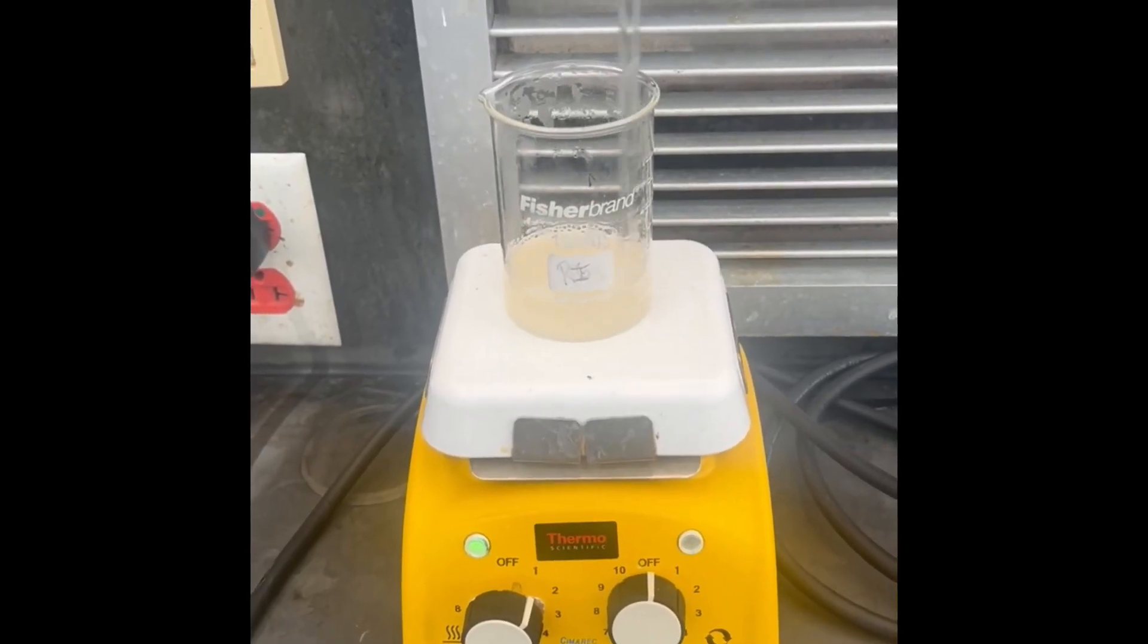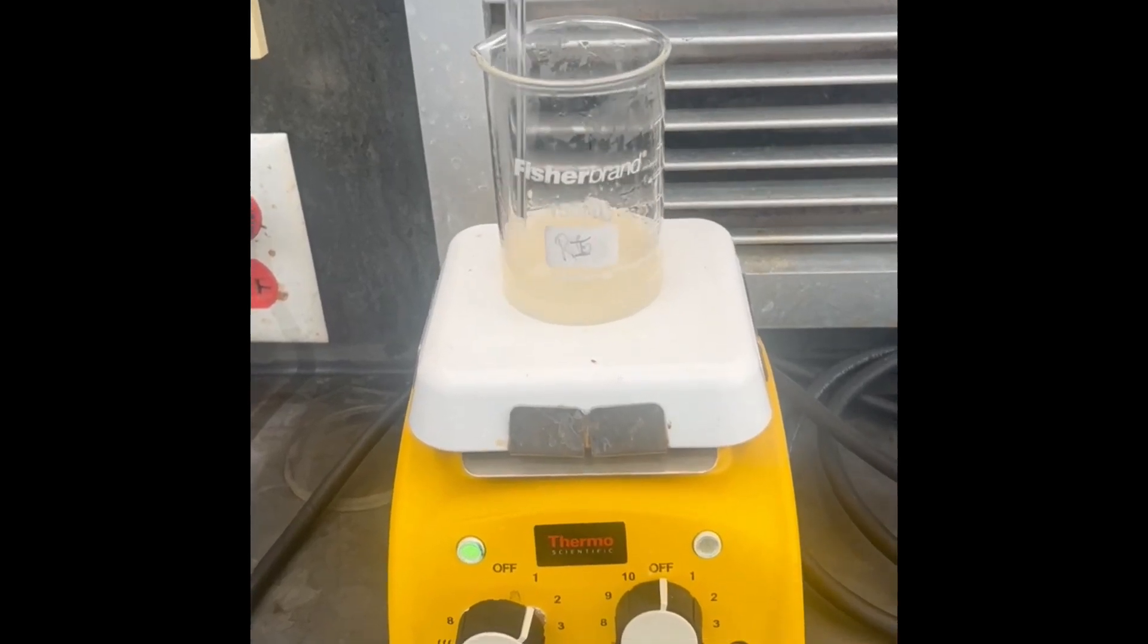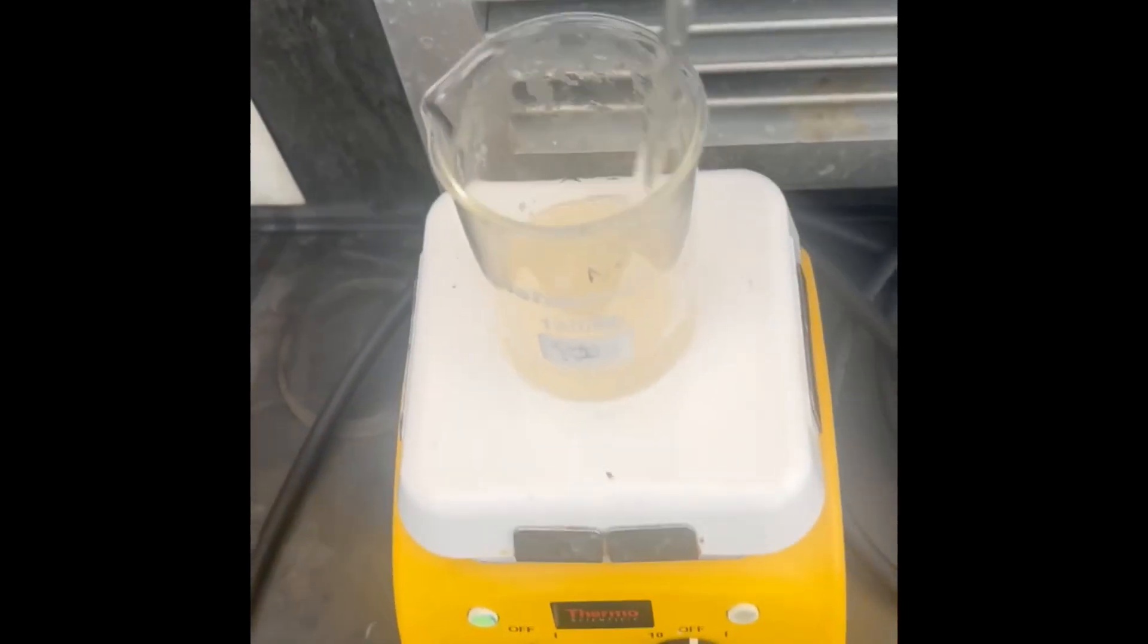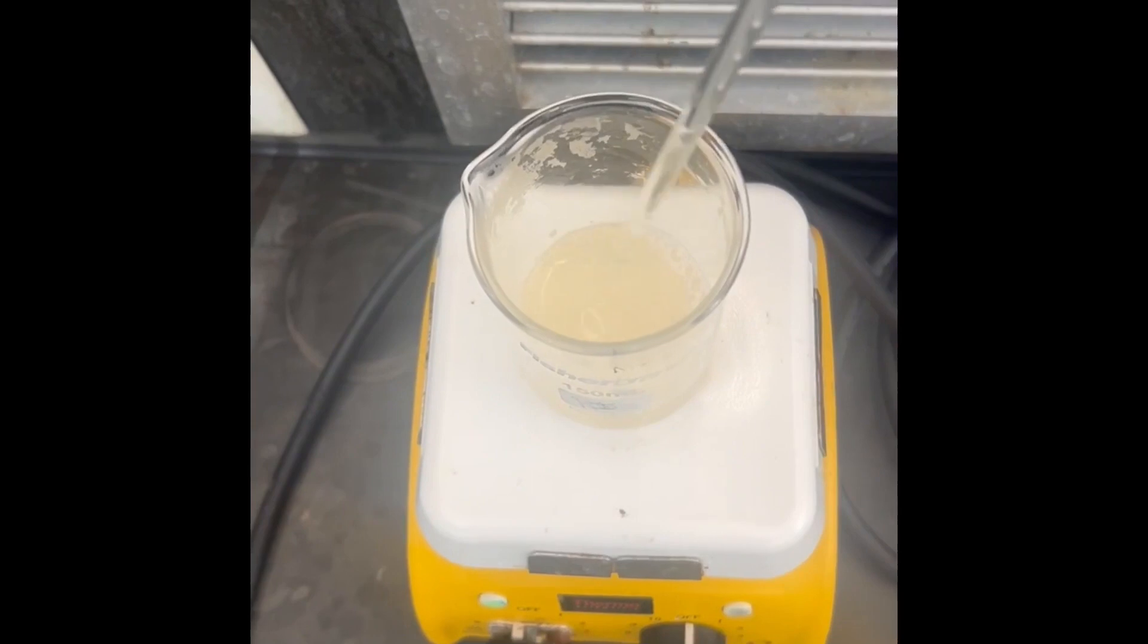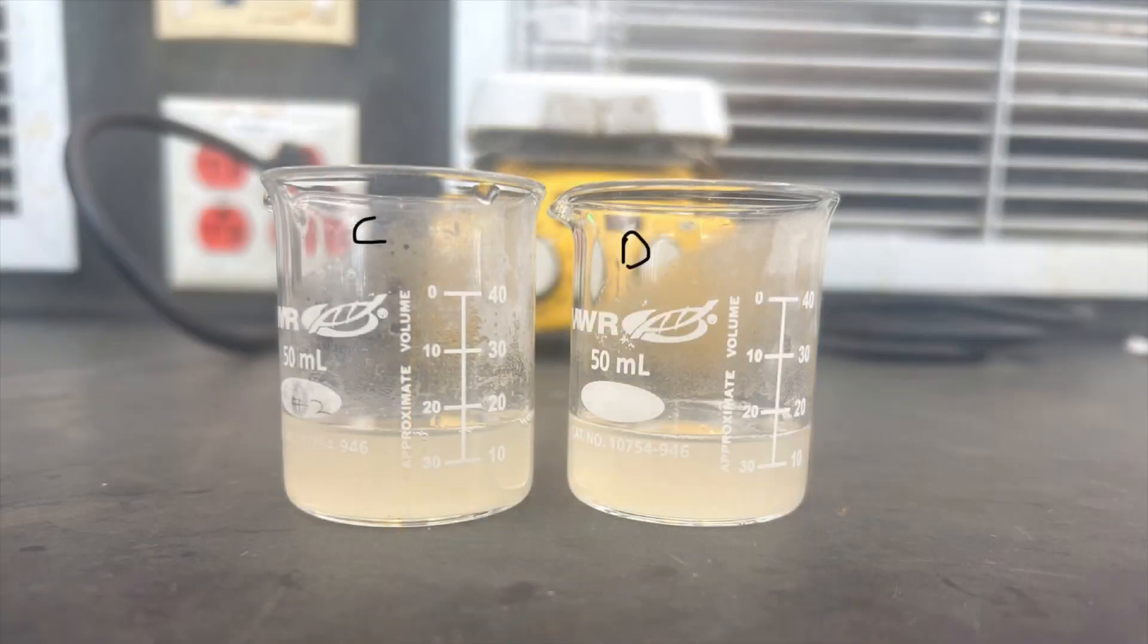Add 30 milliliters of DI water to the mixture and continue to heat and stir until the remains are dissolved. Remove the beaker from the hot plate and separate it into two 50 milliliter beakers. One will be used for Part C and the other for Part D. You have prepared a solution of potassium soap.